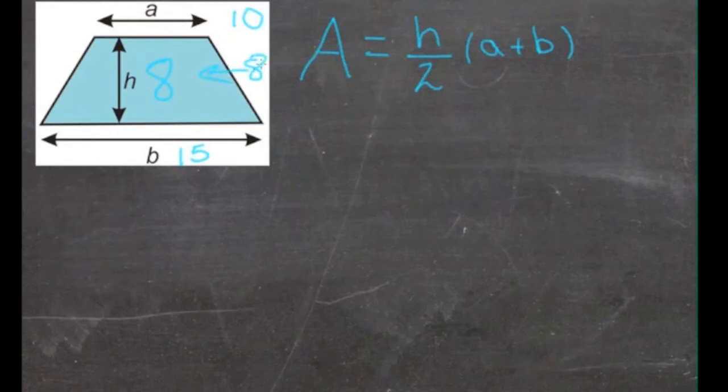If we substitute these values in for the variables, we get A equals 8 over 2 times the quantity 10 plus 15.